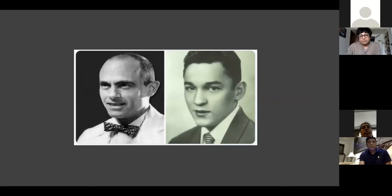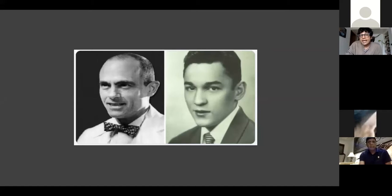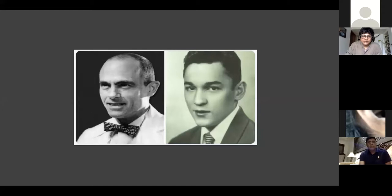Charles Dotter and the young Thomas Fogarty - here shown during his surgical residency - were actually working in the same hospital at the same time. Around the time the first angioplasty happened, the embolectomy catheter had been invented and gone into mass production. This is a young surgical resident whose patent had been accepted and the catheter was in mass production, while Charles Dotter was simultaneously doing the first angioplasty.